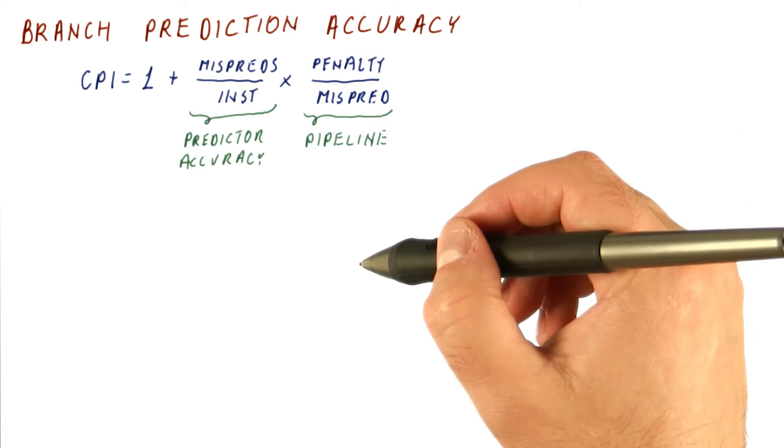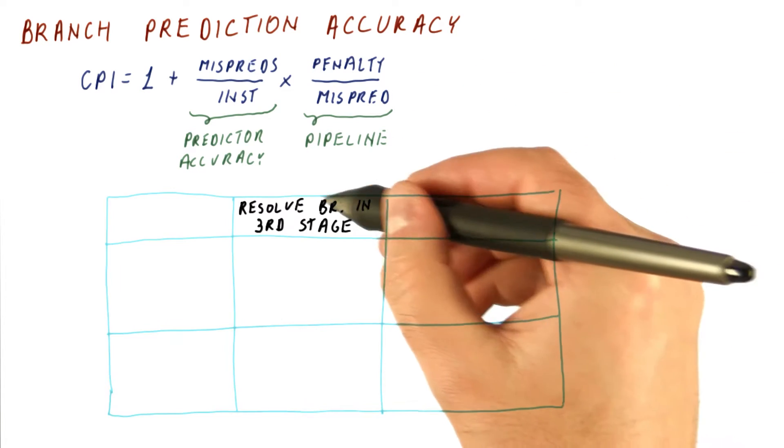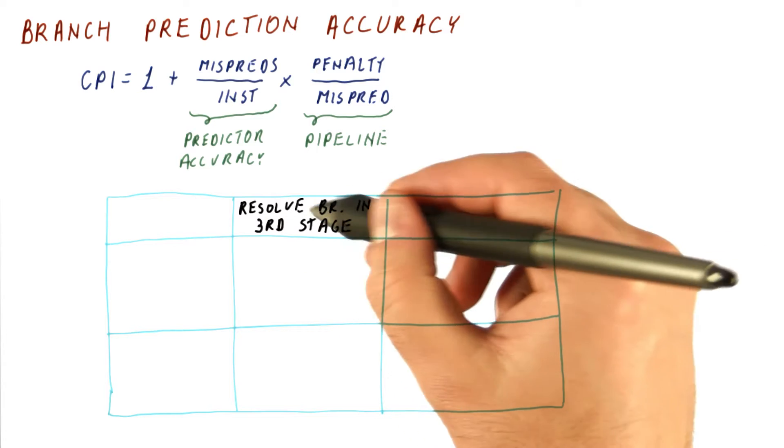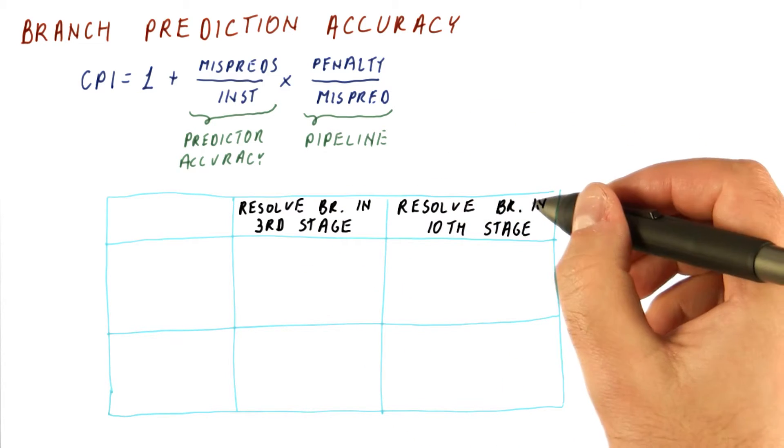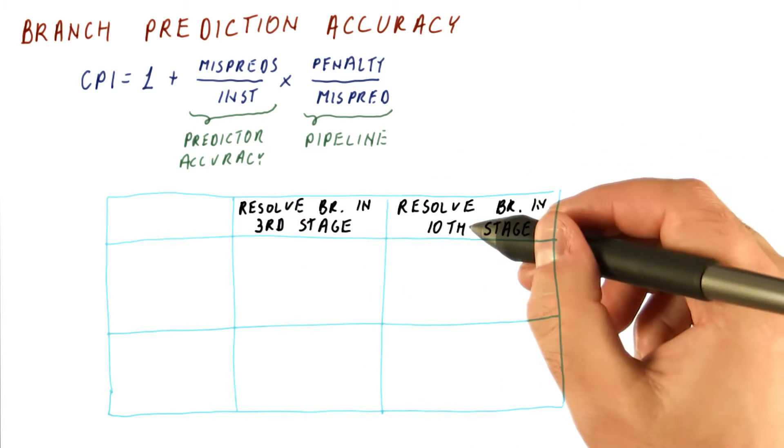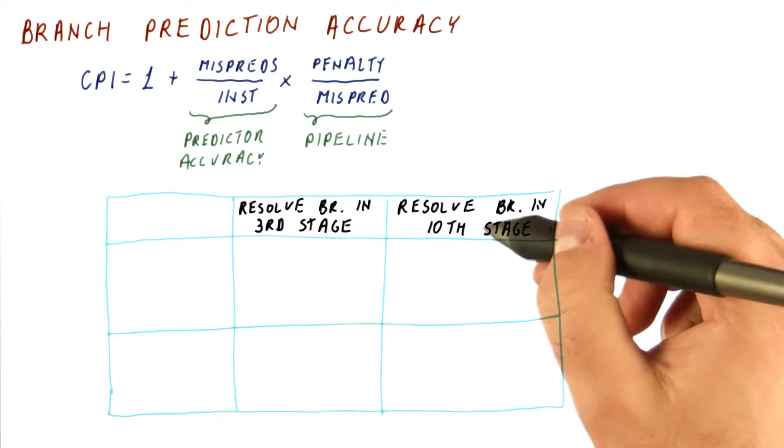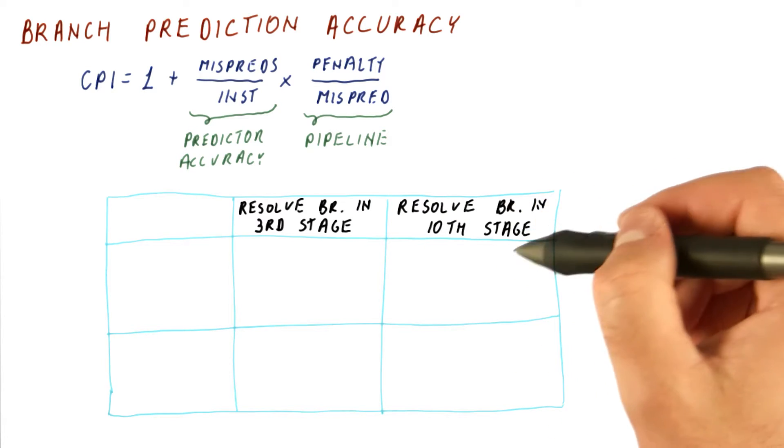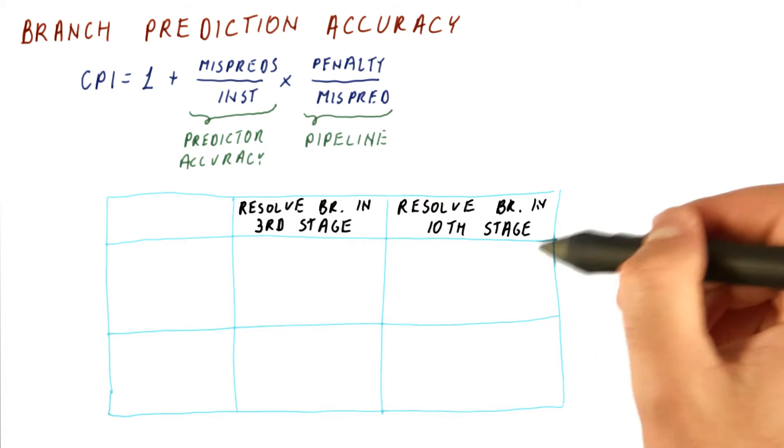Let's look at a more specific example. Let's look at a processor that resolves branches in its third stage of the pipeline and a processor that resolves branches in its tenth stage of a pipeline. This is actually much closer to what modern processors do.